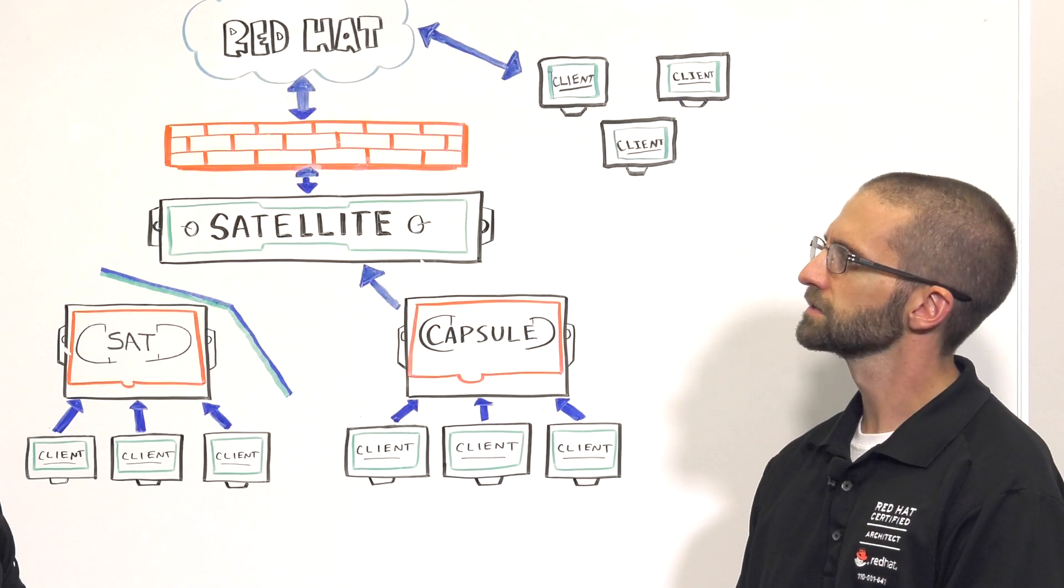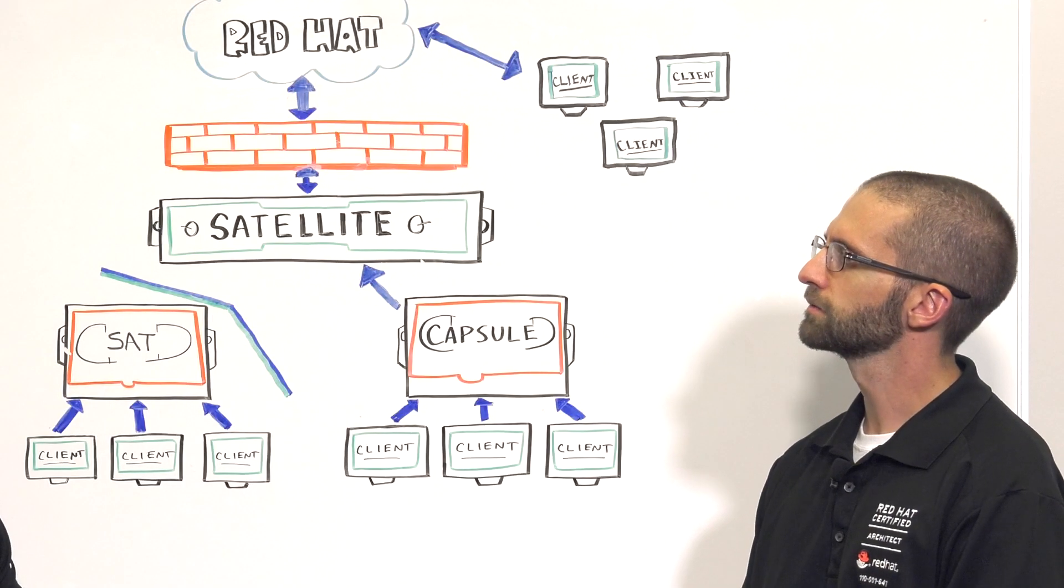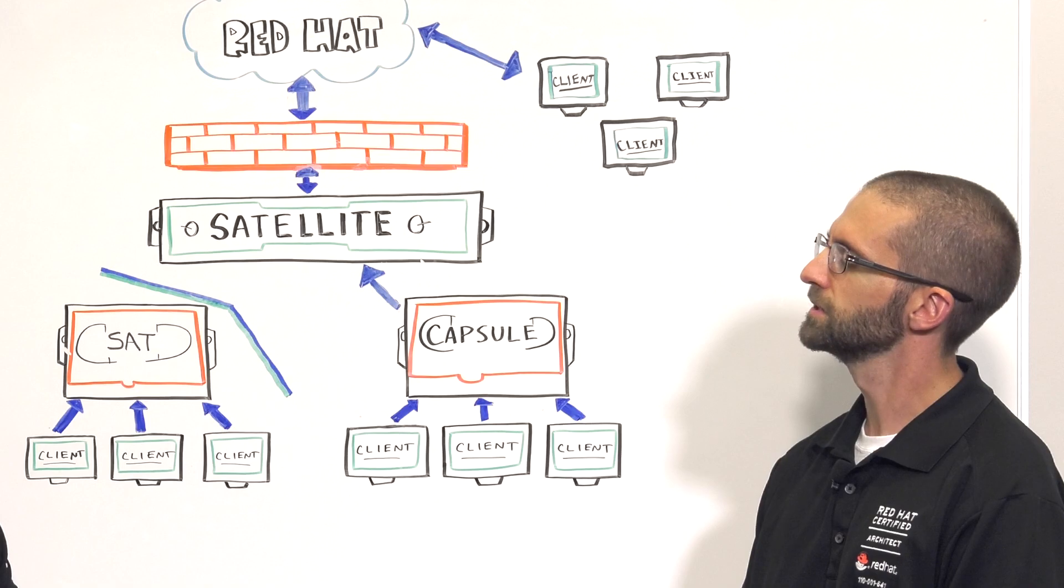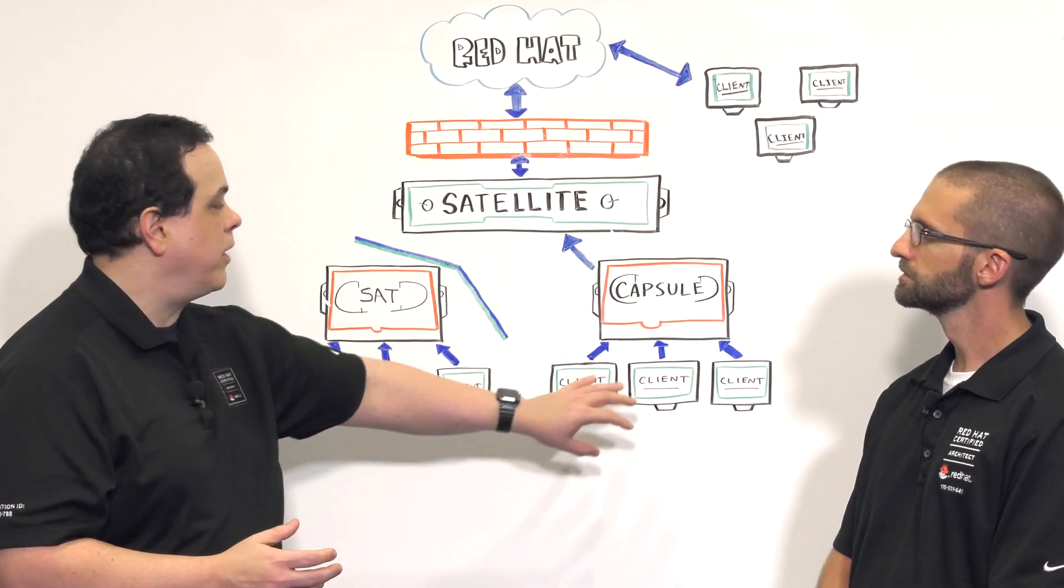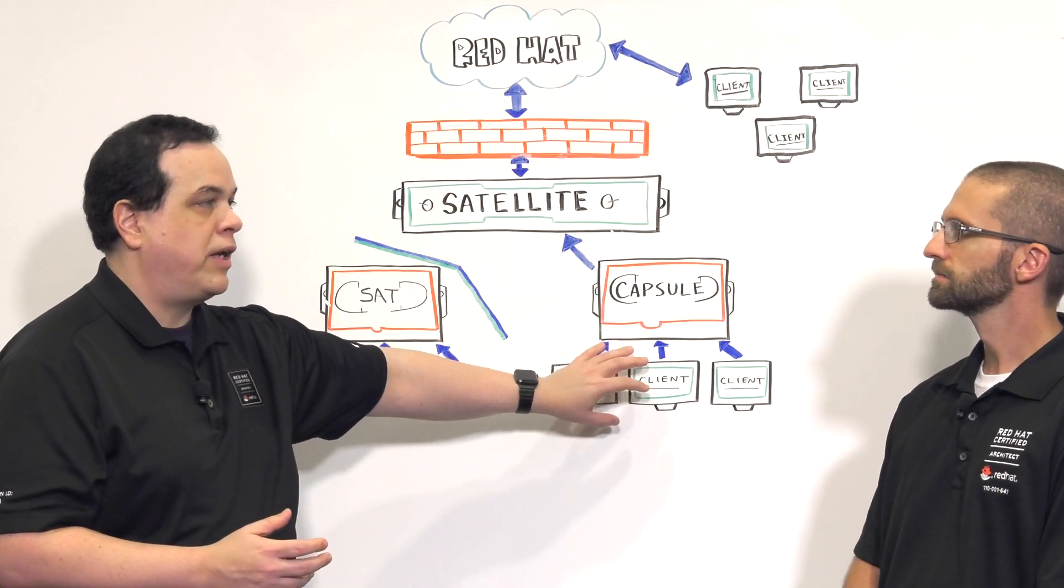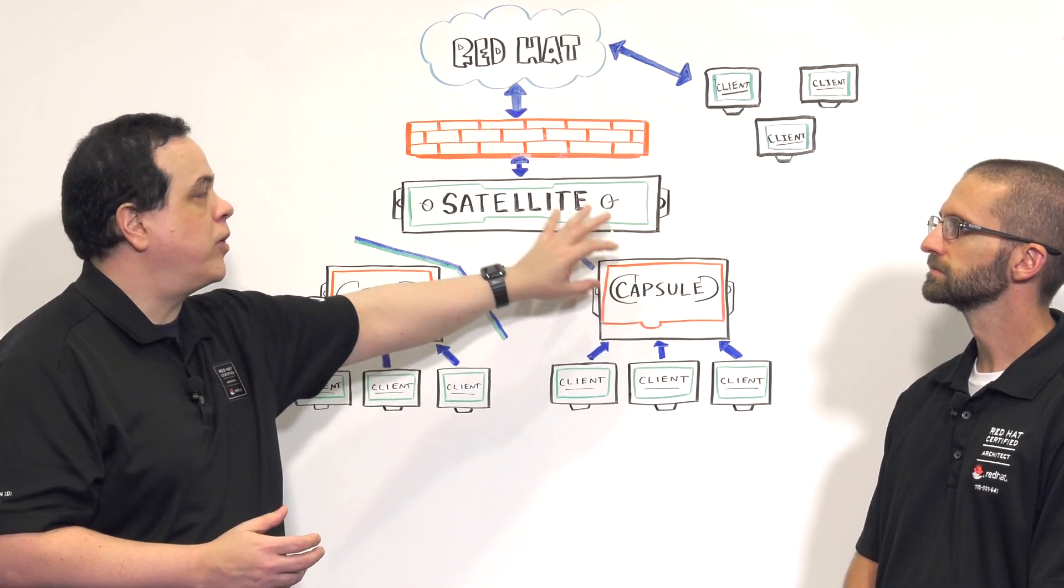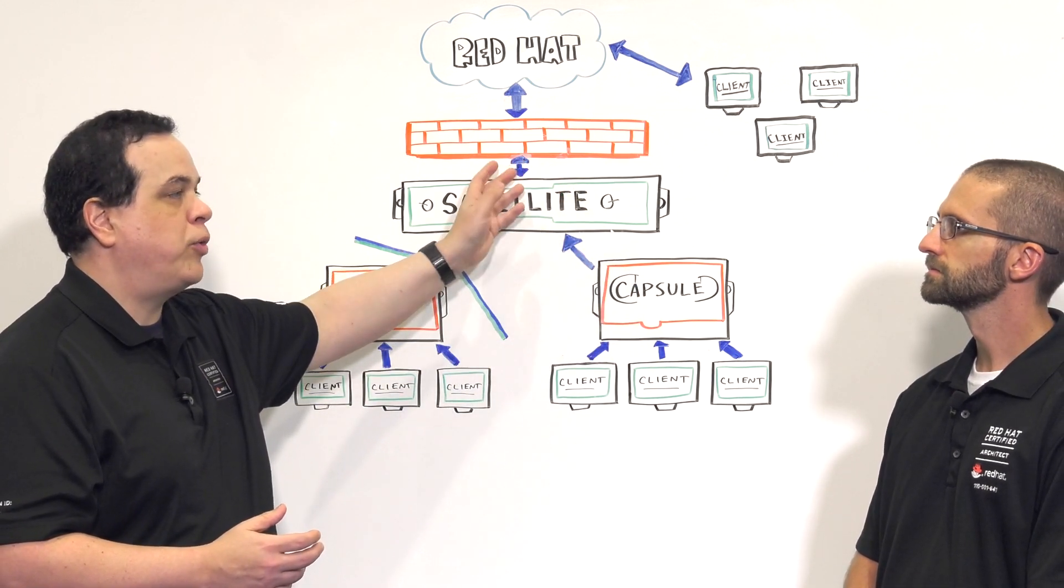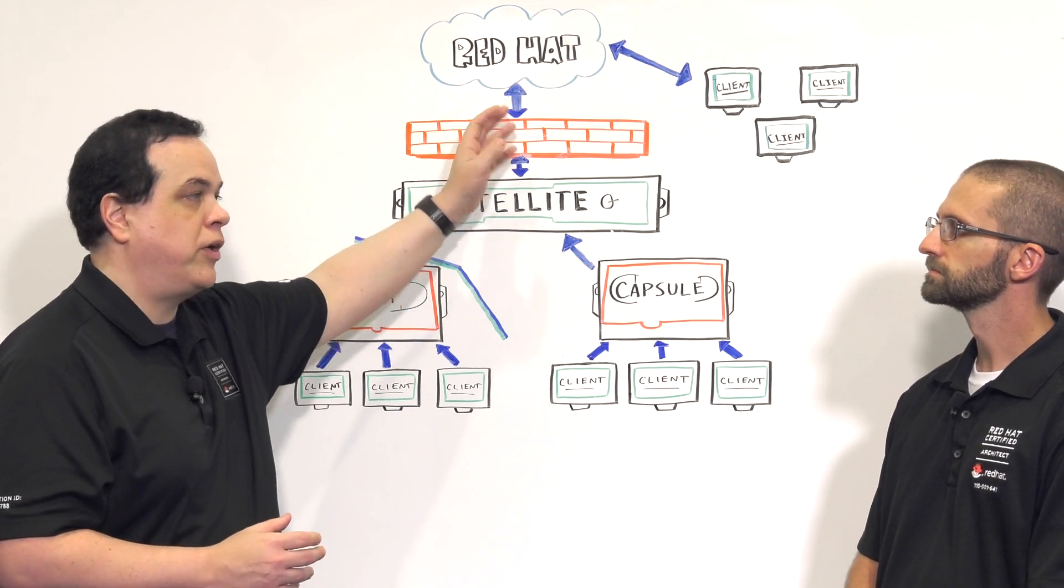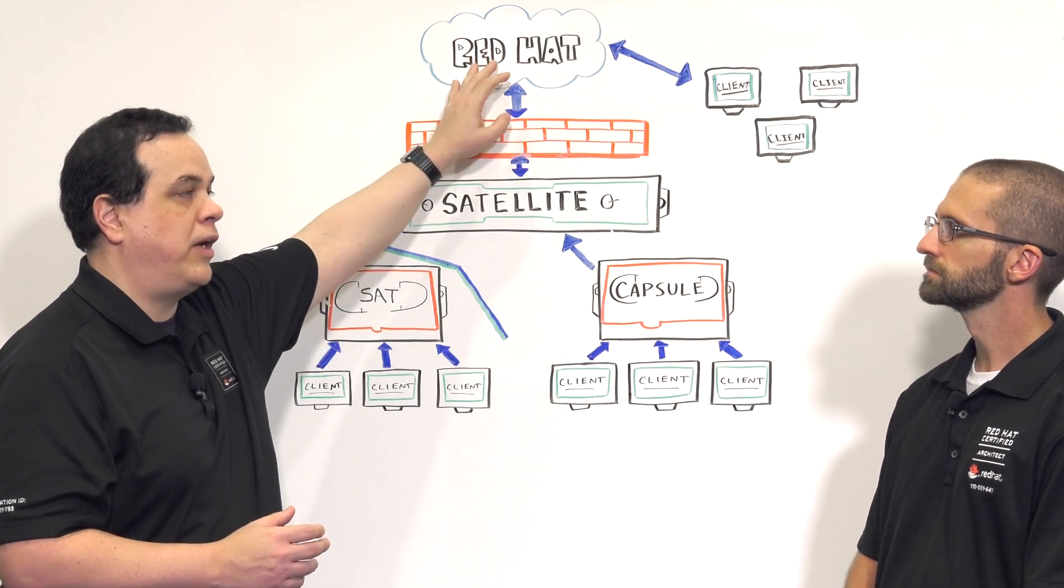What is the process for sending Insights data to Red Hat for clients that are registered through a capsule to a satellite? Well, the Insights agent collects the data on your clients and sends that to their registered capsule. The registered capsule then forwards that on to your satellite server, which will then push it through whatever firewalls or proxies you already have configured to Red Hat, where the analysis is done.